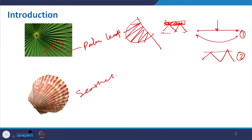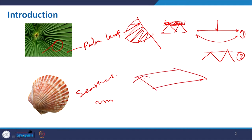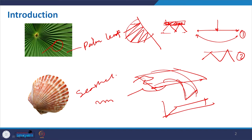Similarly, another structure from nature is the C shell. In this case also, the particular structure makes it more stiff and very strong, acting as protection for these creatures in nature. We can get inspired from that and develop something. In the case of a single piece of paper, if you try to just hold it, it will try to bend — you cannot really hold it flat. But if you just make a fold and hold it again, it has the capacity to take the load.